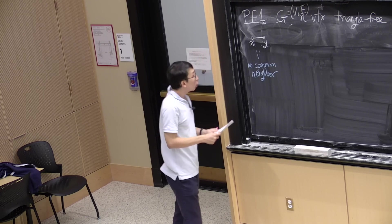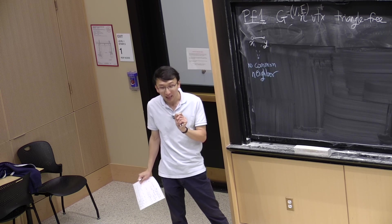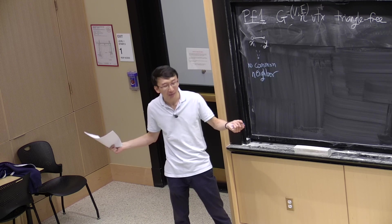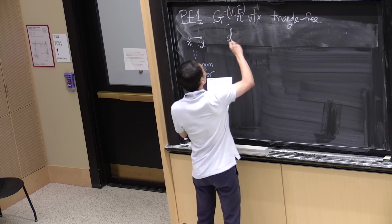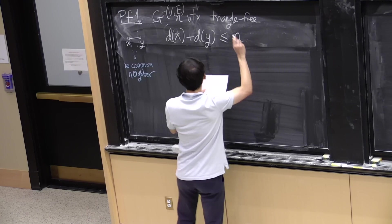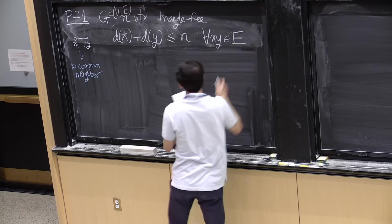Because if they did, I would see a triangle. So assuming G is triangle-free, what can we say about the degrees of the two endpoints of this edge? They cannot add up to more than n. So exactly, the degrees of these two endpoints is at most n whenever xy is an edge. Here, I'm using d to denote degree.